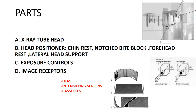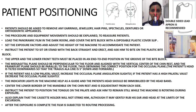The cassette holds the film and intensifying screens. Cassettes can be rigid or flexible, curved or straight, and must be light-tight to protect the films. There is one film with an intensifying screen on either side, all contained within the cassette. The cassette is the image receptor that moves in front of the patient.